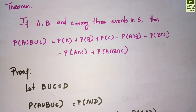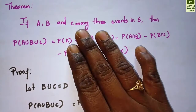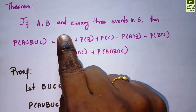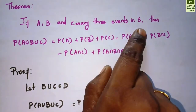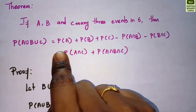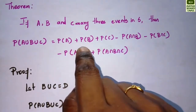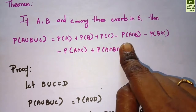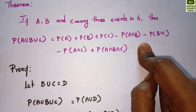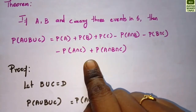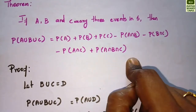Welcome to MaxBoard Tamil. In this video we will talk about the theorem and the proof. The theorem states: if A, B, and C are any three events in S, then probability of A union B union C is equal to probability of A plus probability of B plus probability of C minus probability of A intersection B minus probability of B intersection C minus probability of A intersection C plus probability of A intersection B intersection C.